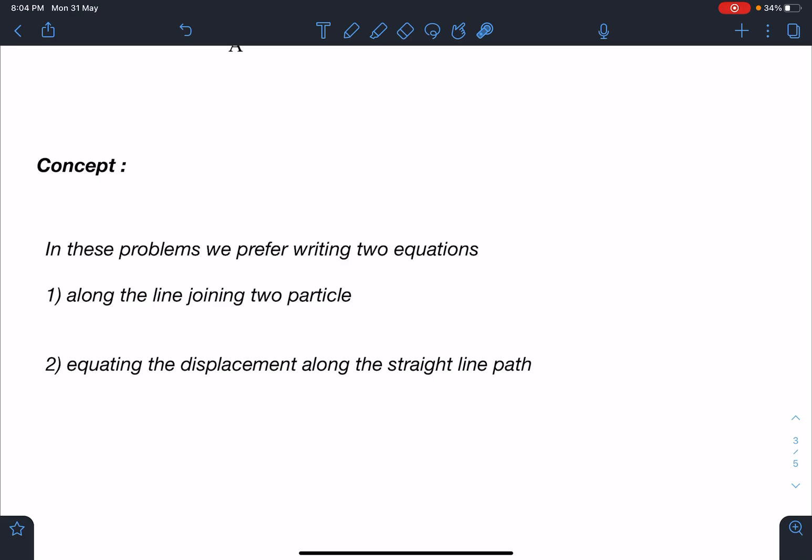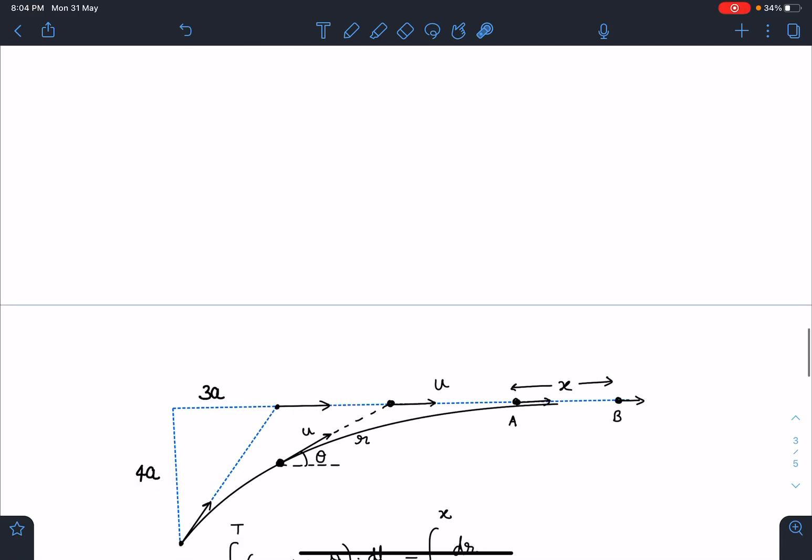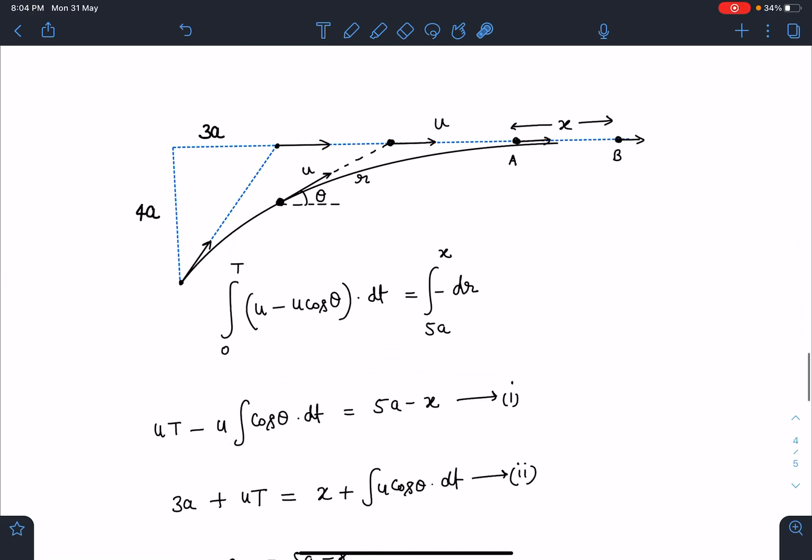In one case we write equation of motion along the line joining the two particles, and then we try to equate the displacements along the straight line path. Usually one of the particles will be moving in a straight line path and another will be chasing it and will follow a curved path.